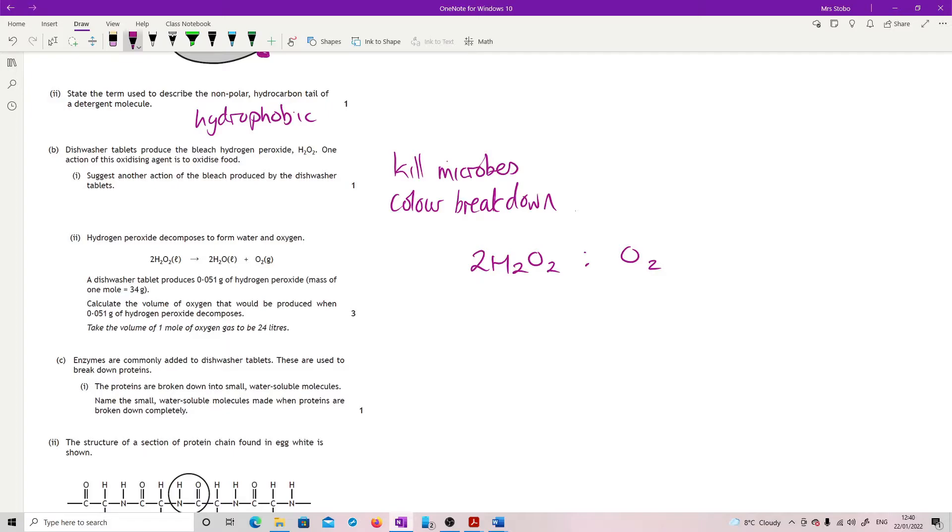The mass of hydrogen peroxide is 34. So that means that 68 grams of this, 2 times 34, would give me one mole, so 24 litres of oxygen. We're then looking for 0.051 grams of hydrogen peroxide. How many litres of oxygen? So 0.051 divided by 68 times by 24 gives me 0.018 litres.